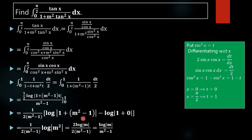The 2 in log(m²) can be brought out using the log power rule: log(m²) equals 2·log|m|. So we get (1/2) times 2·log|m| divided by (m² − 1). The factor of 2 cancels, giving us the final answer: log|m| divided by (m² − 1). This uses the identity n·log(x) = log(xⁿ).